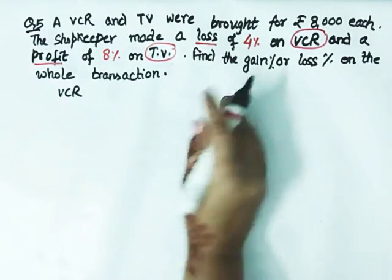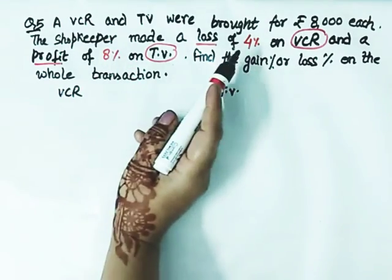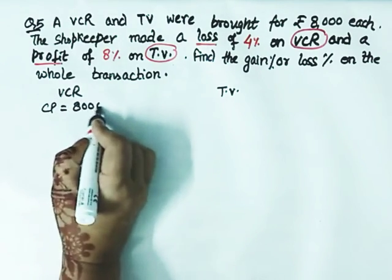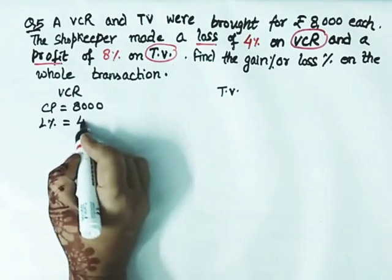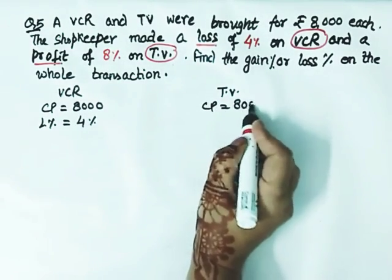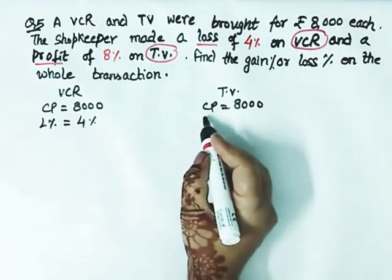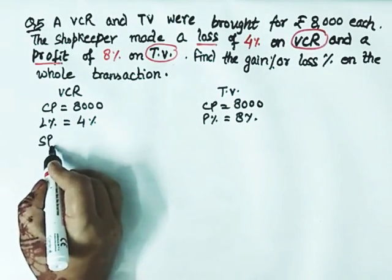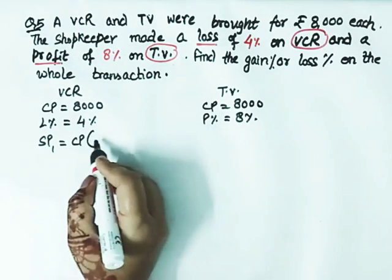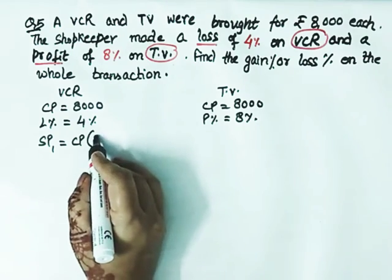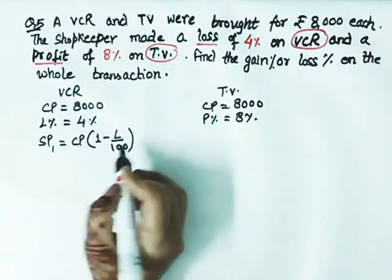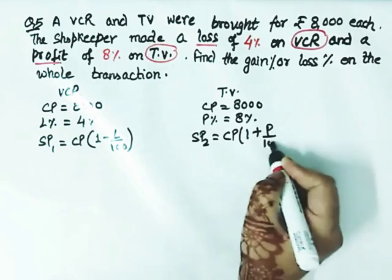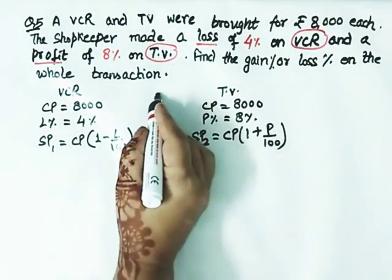Here I write for VCR and beside it I write for TV. For VCR there is a loss. The CP of VCR is 8,000. Loss percentage is 4%. TV's CP is also 8,000 because both have the same CP. Here it is getting profit percent of 8%. Same formula for finding SP. Let this be SP1. Since CP is the same, we can write CP. When there is loss, it's 1 minus L upon 100. Here SP2 will be CP multiplied by 1 plus P by 100.